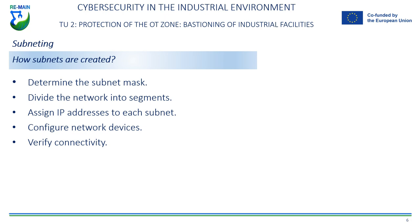Third, assign IP addresses to each subnet. Each subnet must have a unique IP address that allows hosts on the subnet to communicate with each other and with other subnets. The IP address for each subnet is obtained by applying the subnet mask to the IP address of the original network. Fourth, configure network devices. Network devices such as routers and switches must be configured to recognize subnets and allow hosts on different subnets to communicate with each other.